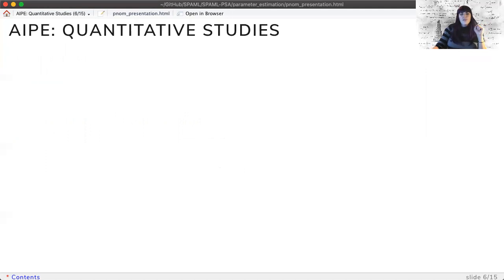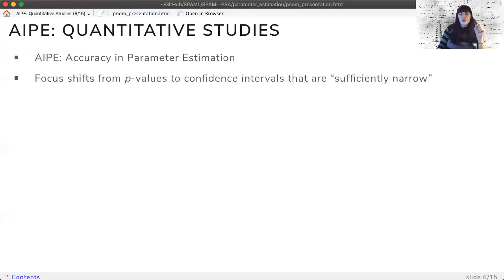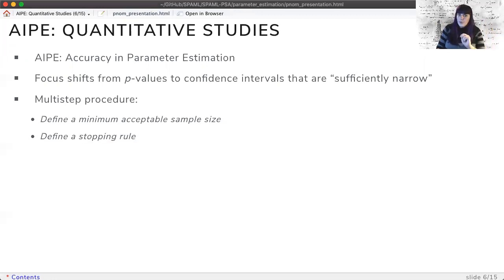The procedure for quantitative studies is remarkably similar if we use accuracy in parameter estimation. In APE, the focus shifts away from p-values and hypothesis testing to calculating the desired sample size to accurately measure a parameter by providing a sufficiently narrow confidence interval. For this process, you would define a minimum acceptable sample size, define a stopping rule, and finally define a maximum sample size.